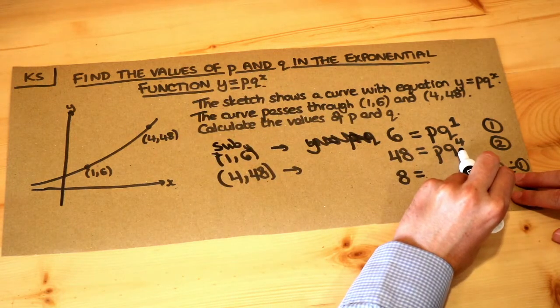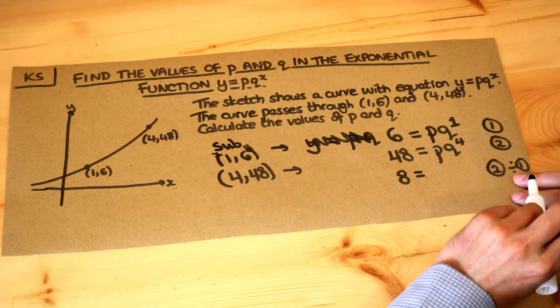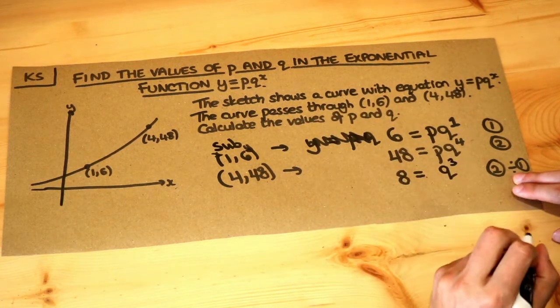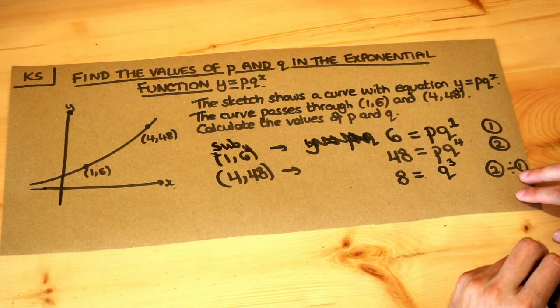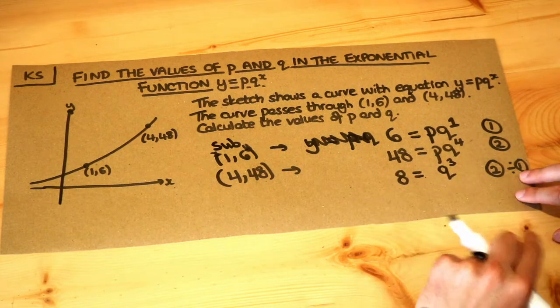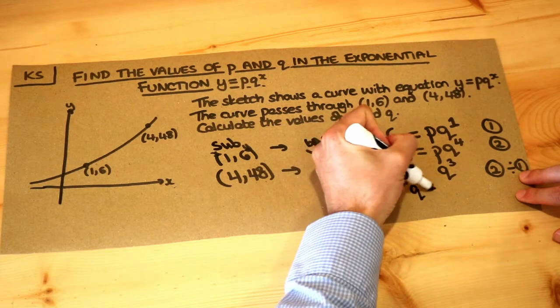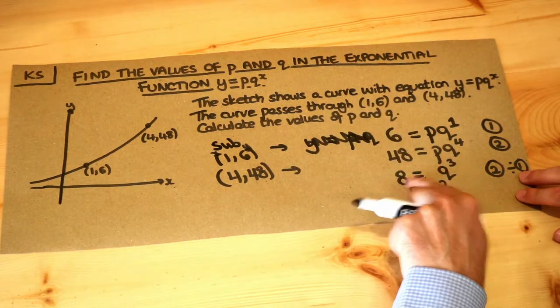And then we've just got q^4 divided by q^1, which by laws of indices is q to the power of 3. 4 minus 1 is 3. So we're just left with q cubed is 8. Well, if we cube root both sides, then q equals 2, because 2 cubed equals 8.